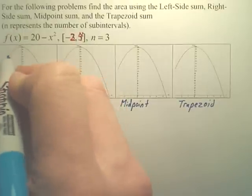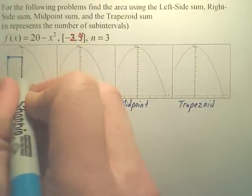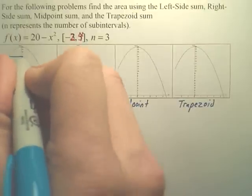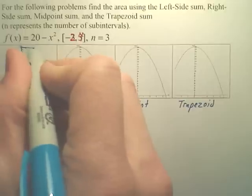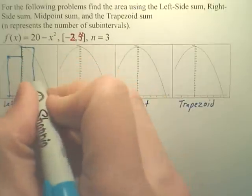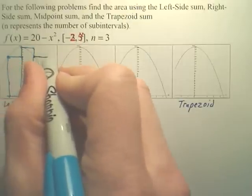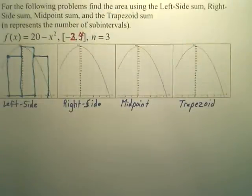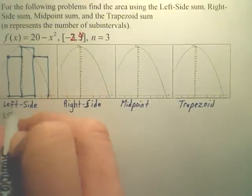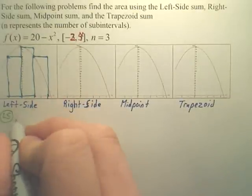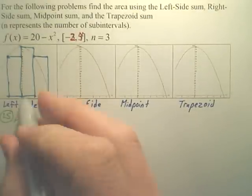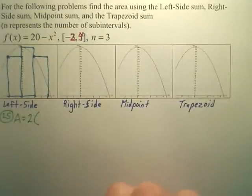If it's left side, you go up, you hit the graph from the left side, and then go across, make your rectangle. Then you go up for this one, hit the graph, make your rectangle. And then you go up, hit your graph, and make your rectangle. For the left-side approximation, if you want to find the area, the width of all these is two, so I'm going to put the two on the outside because they're all going to be multiplied by two.